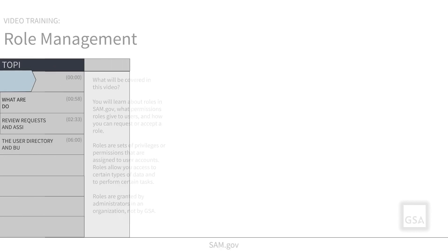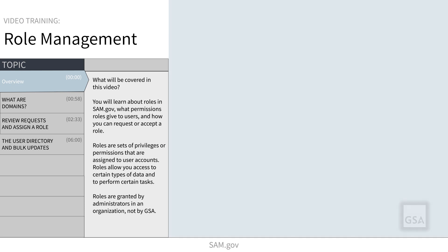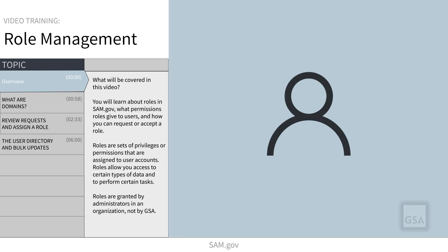If you are an administrator of an entity or federal organization in SAM.gov, you can grant and change roles for others in your organization. In this video for administrators, you will learn about the roles in SAM.gov, how administrators manage role requests, and how administrators can use the user directory to assign roles or make bulk updates.